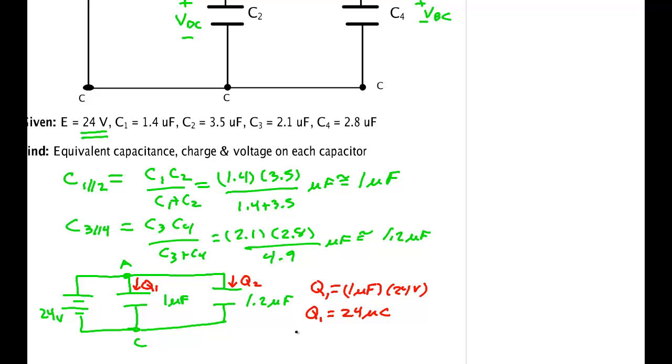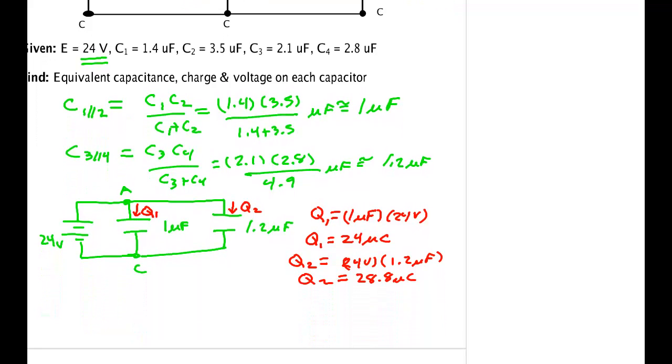We also know that Q2 equals 24 volts times 1.2 microfarads, so Q2 equals 28.8 microcoulombs.